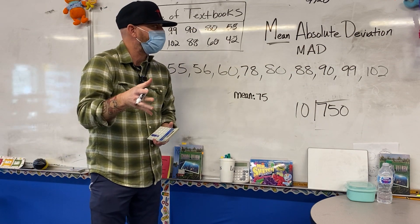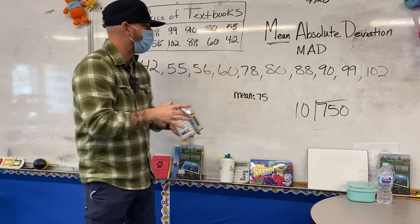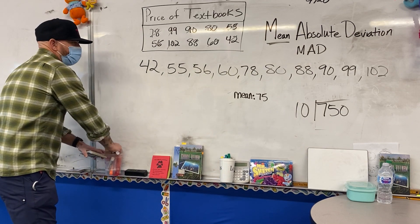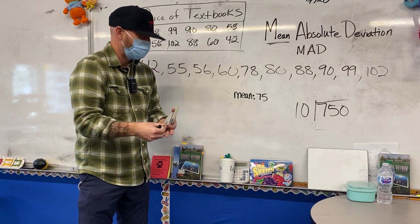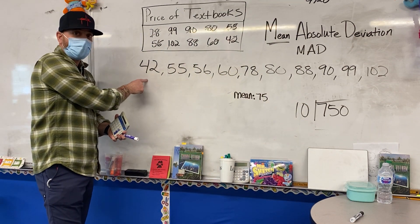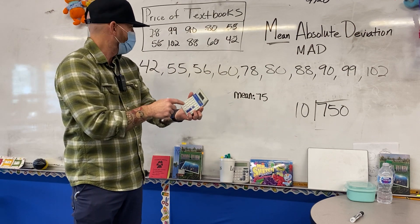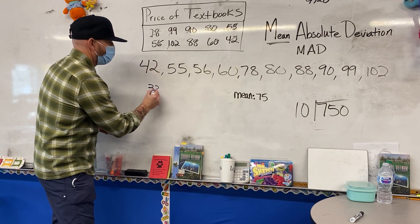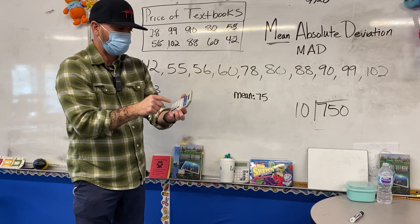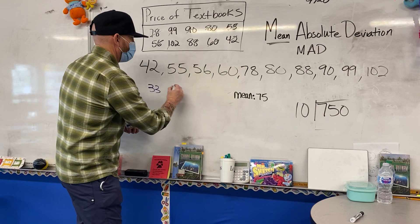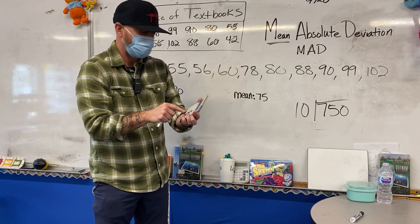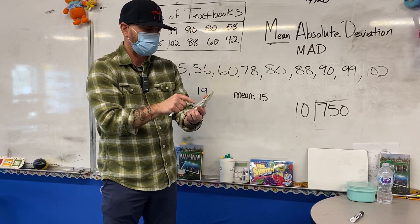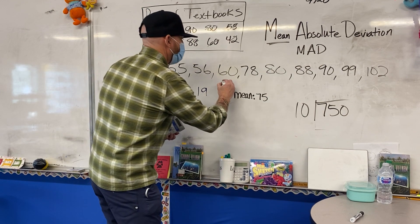Now the difference with mean absolute deviation is we have to find out how far each of these values is away from the mean. So I'm going to take the mean and find out how far 42 is from the mean by subtracting. So 75 minus 42 is 33. I'm going to do 75 minus 55 — that's 20. 75 minus 56 is 19. 75 minus 60 is 15.